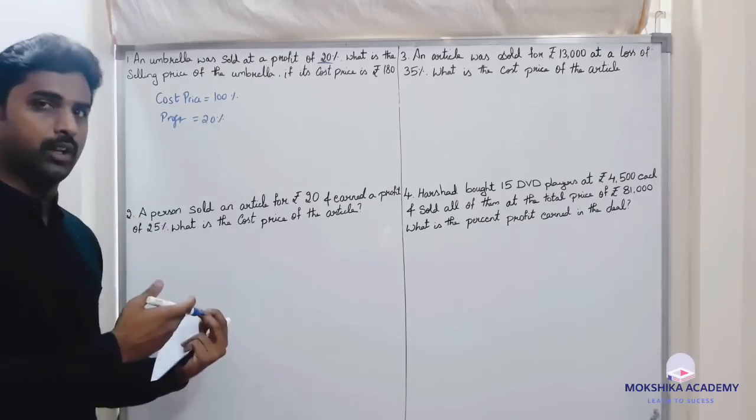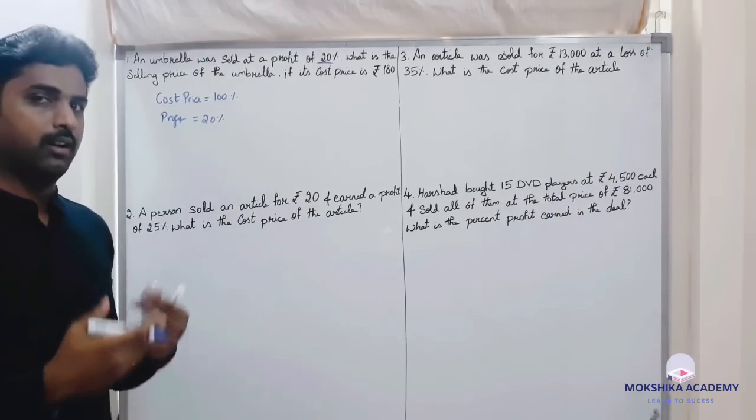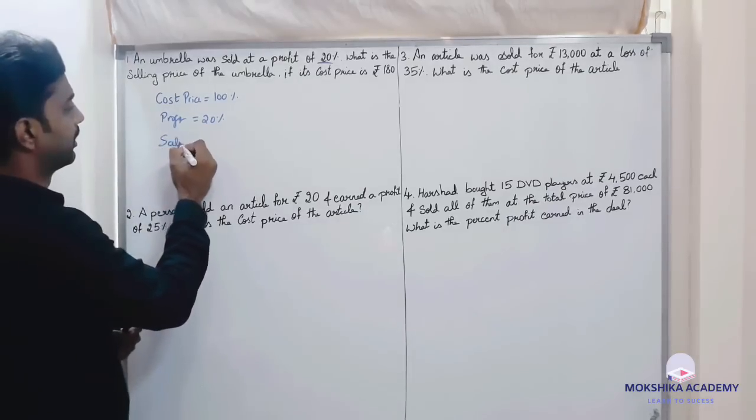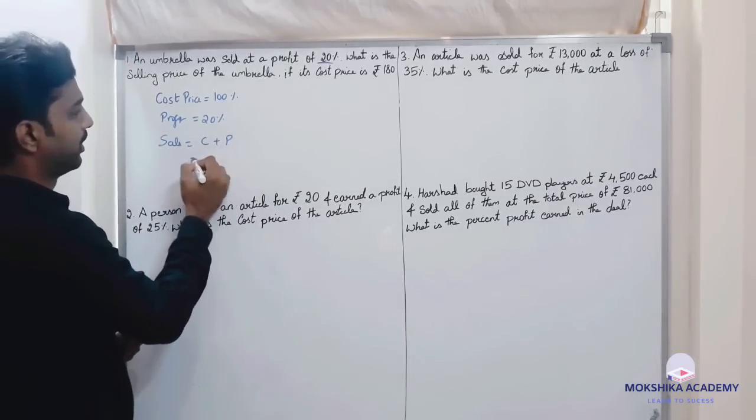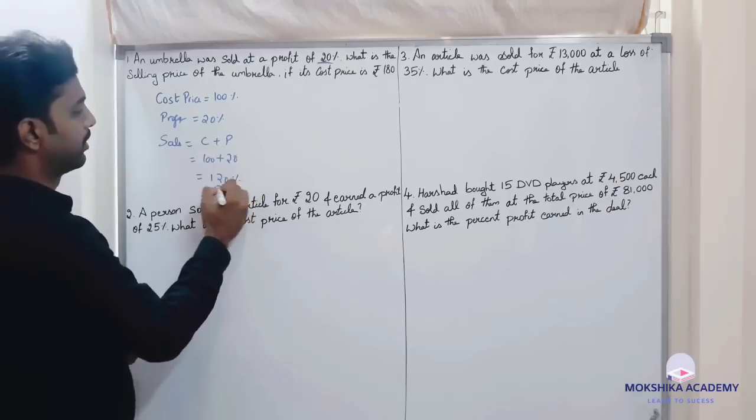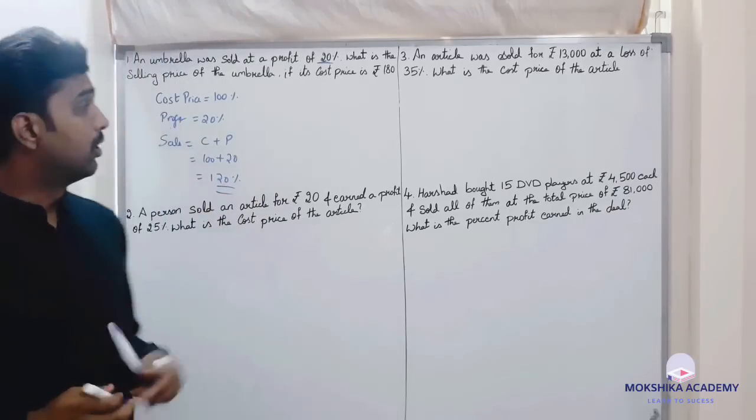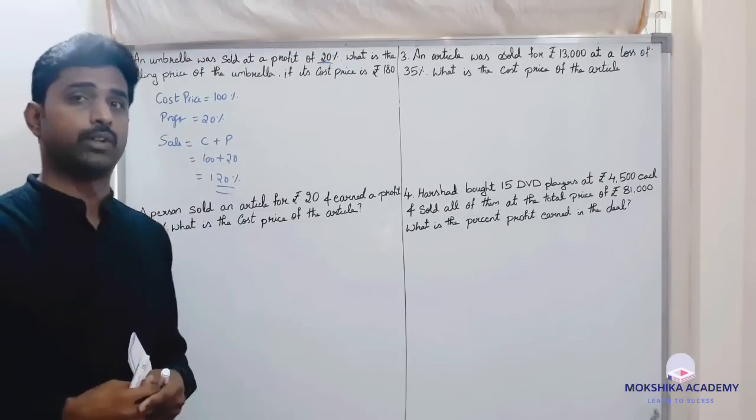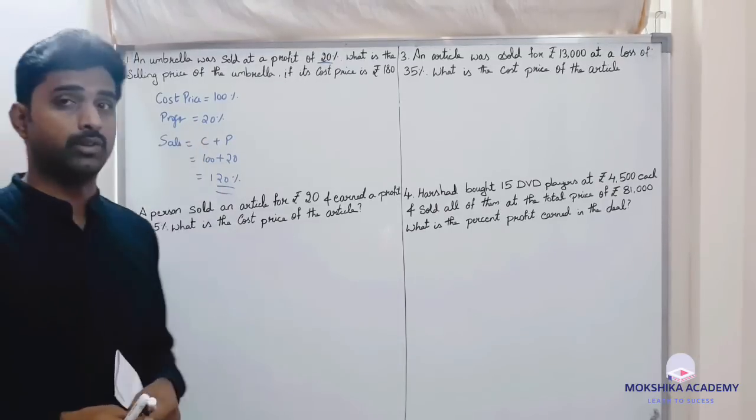Cost plus profit, so 100 plus 20, that is 120 percent. Okay students, so cost price is 100 percent, sales is 120 percent, profit is 20 percent.